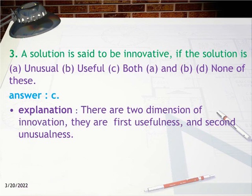Question 3: A solution is said to be innovative if the solution is: a) unusual, b) useful, c) both a and b, d) none of these. Answer: c. Explanation: There are two dimensions of innovation — first, usefulness, and second, unusualness.